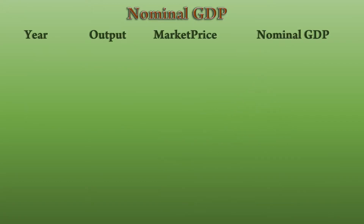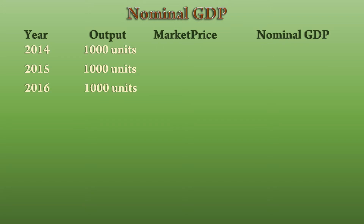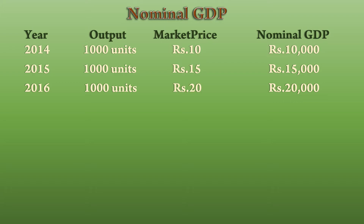Look at this imaginary table. Output remains at 1000 units in all three years, but the Nominal GDP increases. It is only because of an increase in price. It means people consume the same quantity of goods at a higher price. In fact, their welfare has gone down.